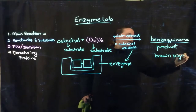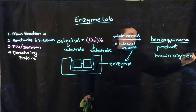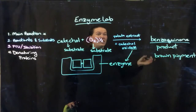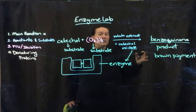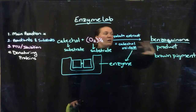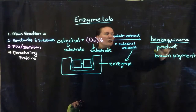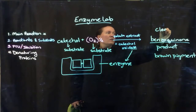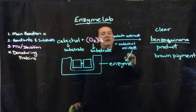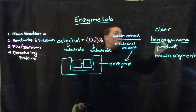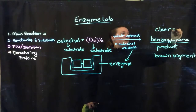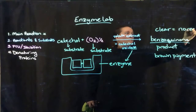That's how we know the product has been made — when we start to see brown in our solutions. When the reaction has gone to completion, if nothing happened and it's still clear, that means nothing happened — there's no product. So clear means no reaction.